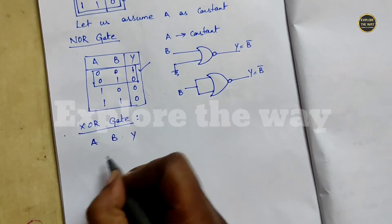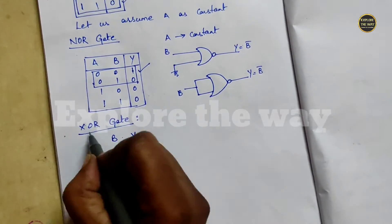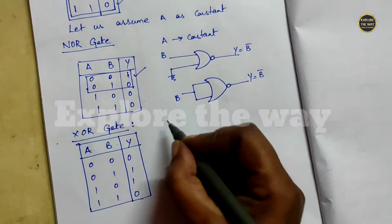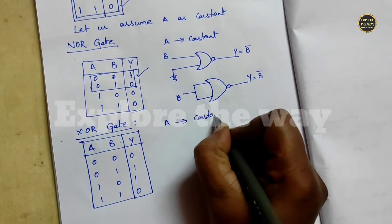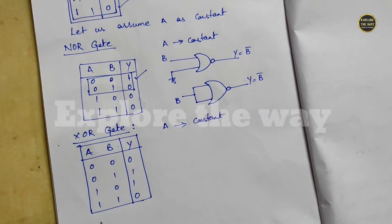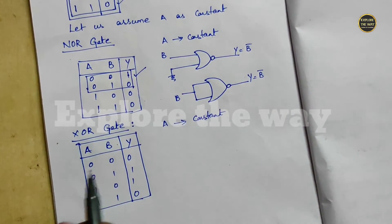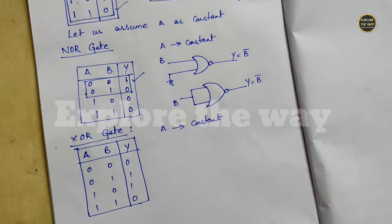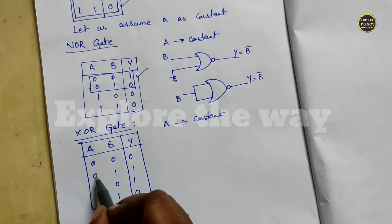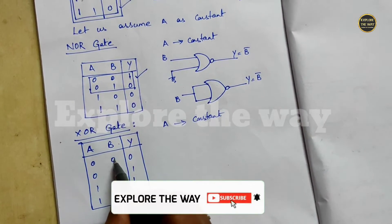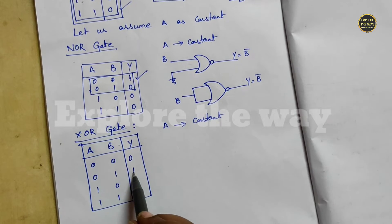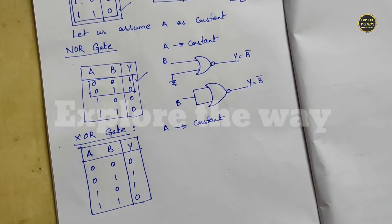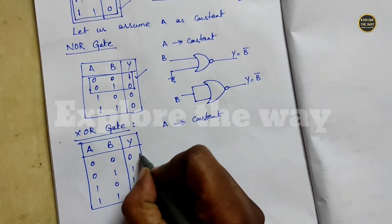XOR gate functionality: again make one of the inputs constant. When A is equal to 0, the output is the same as B — if B is 0 output is 0, and when B equals 1 output is 1. So this combination is not useful.